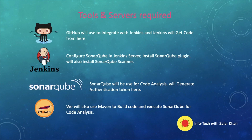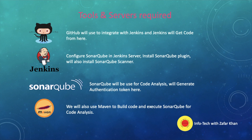GitHub will be used to integrate with Jenkins and Jenkins will get the code from there. We will configure SonarQube in the Jenkins server and install the SonarQube plugin. We will also install the SonarQube scanner to execute the code. SonarQube will be used for code analysis and we will generate an authentication token. We will also use Maven to build the code and execute SonarQube for code analysis.